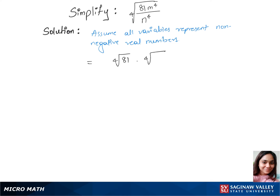Fourth root of 81 times fourth root of m power 4 over fourth root of n power 4. In our next step, we have fourth root of 81, which can be written as fourth root of 3 power 4.